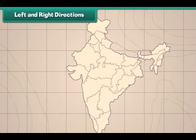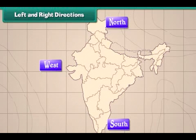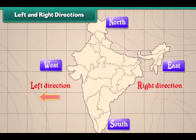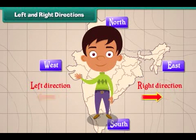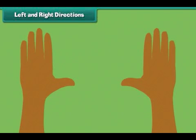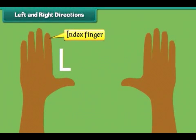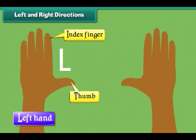In addition to north, south, east, and west, we also use left and right directions to locate a place. We use our hands to indicate left and right directions. The hand that makes the letter L when the index finger and thumb are stretched out is the left hand.